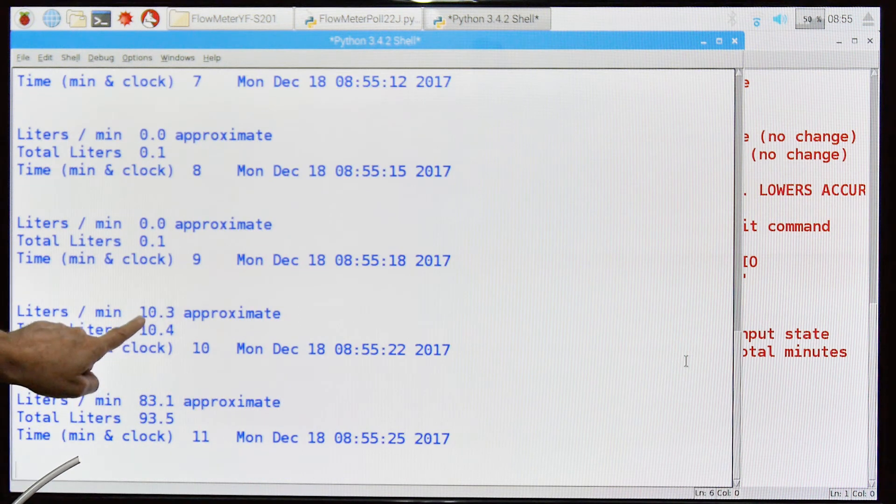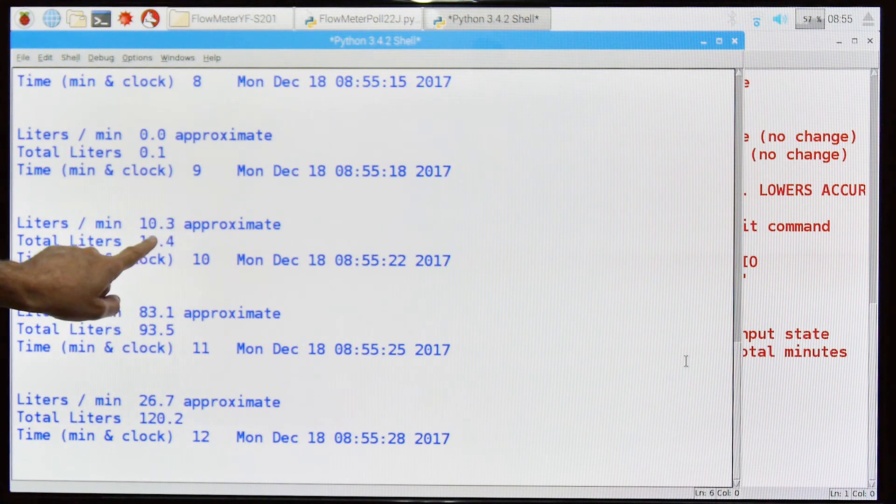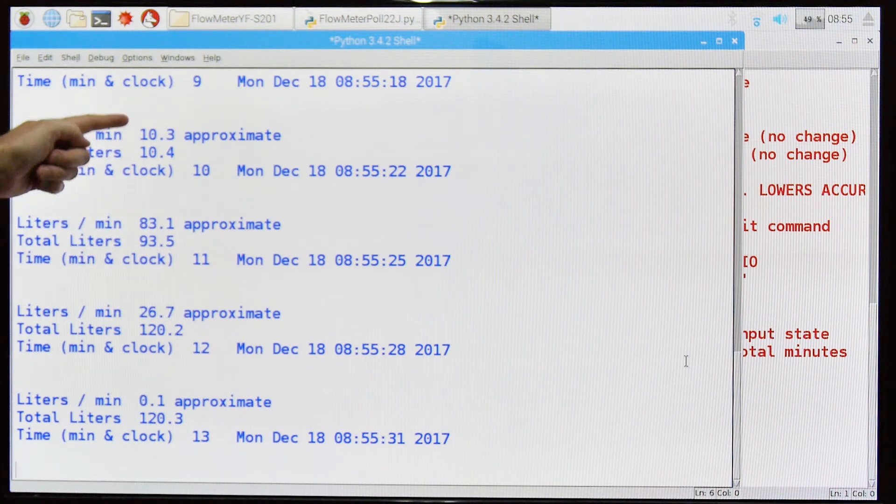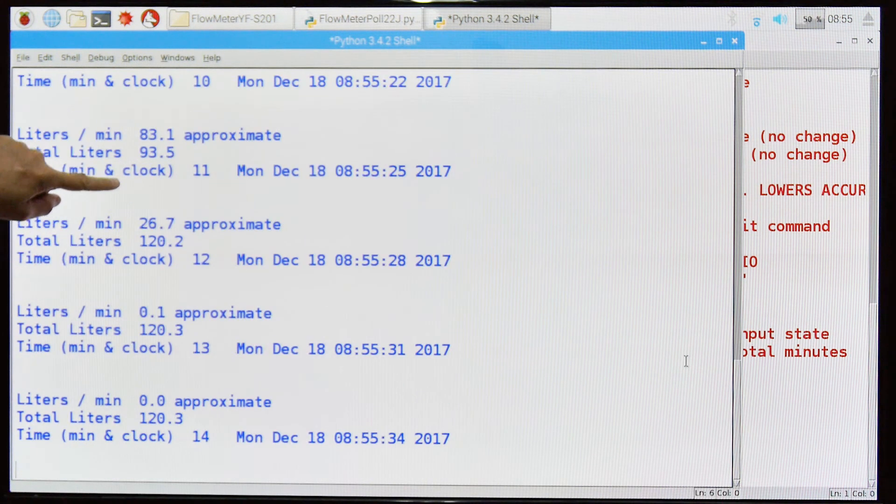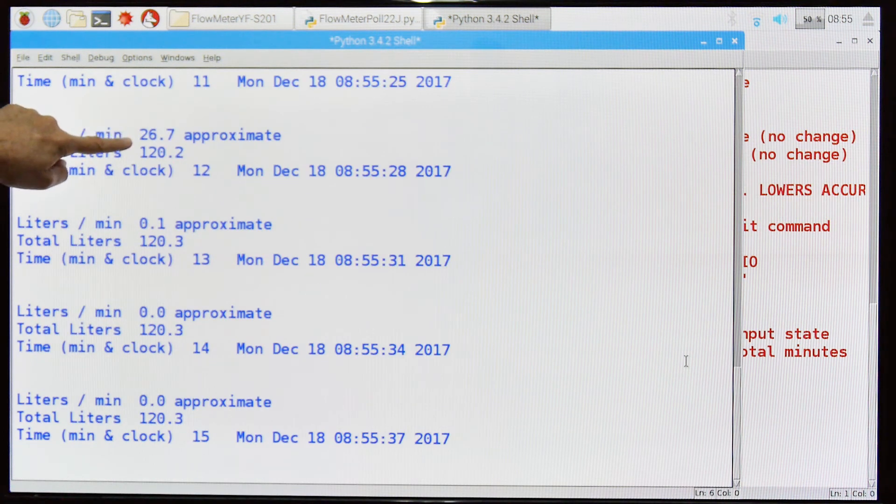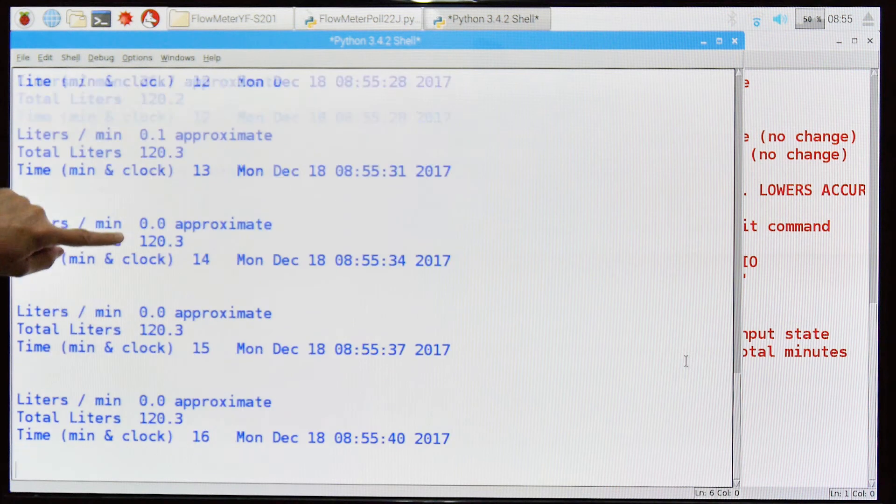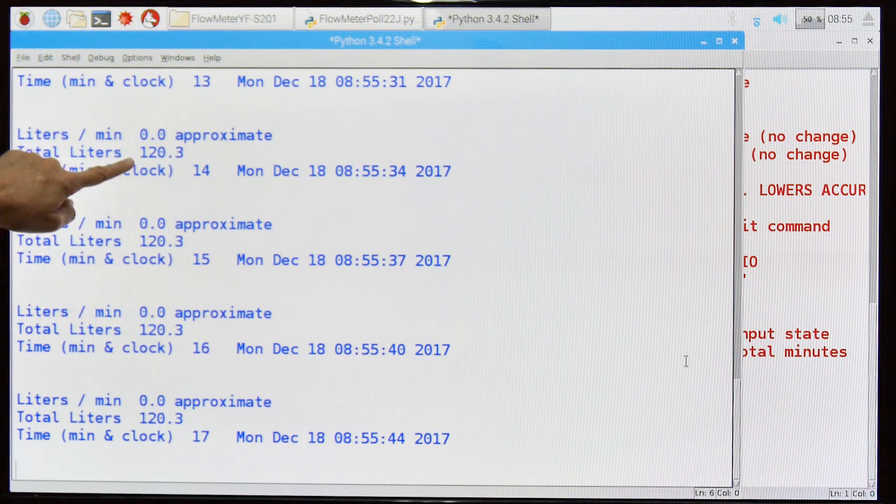So here you can see that the liters per minute rate, this is an approximate, this is an estimate, has jumped up and of course the total liters at first matches that. You can see that it's gone down, it went up and then it's going down now because I stopped blowing in it. You can see here that the impeller has stopped and that the total liters is not increasing, which is what it should be.